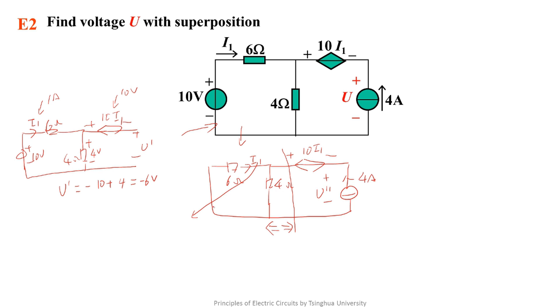So seeing from the left side, this is a 4 ampere current source and this is a current divider circuit. I1 equals minus 0.4 times 4 equals minus 1.6 ampere. The voltage is minus 16 volts. Then we get U' equals minus minus 16 volts minus 6 times minus 1.6. The minus sign here is due to the reference direction of the dependent source. The minus 16 is the voltage here. The minus sign here is due to the reference direction of the resistor. The minus 1.6 is the current here.